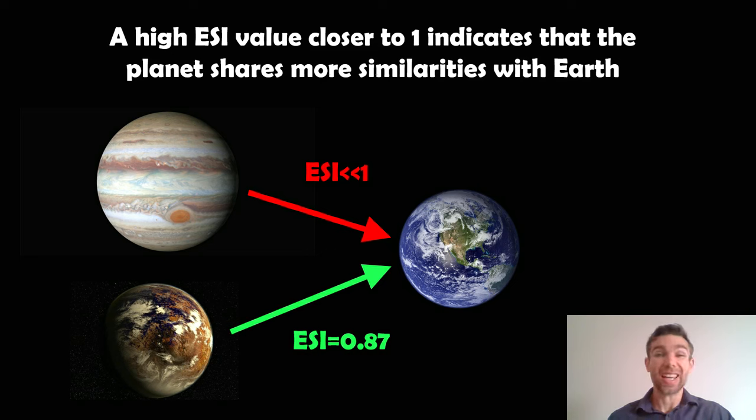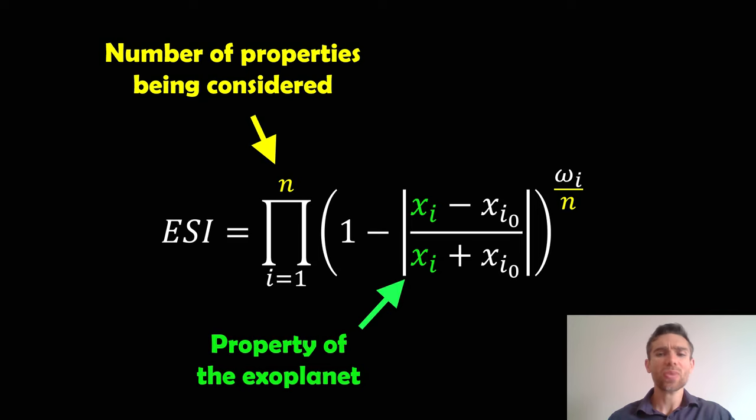So, for example, I've got Jupiter and I've got Proxima Centauri b here. Now, Jupiter is not really Earth-like. So we would expect an ESI considerably smaller than one for a gas giant. But Proxima Centauri b actually has a value pretty close to one. So pretty close, 0.87. That's fairly similar. That's actually our nearest exoplanet, and it shares a lot of similarities with Earth. So our nearest exoplanet is fairly similar to Earth. That's quite exciting, actually.